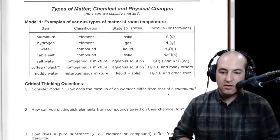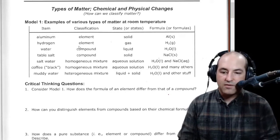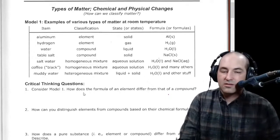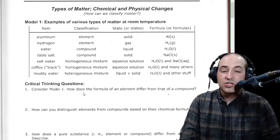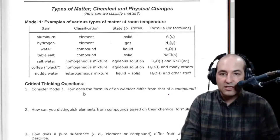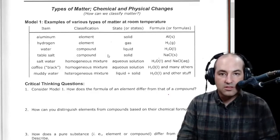Consider model one. How does the formula of an element differ from that of a compound? So you're not supposed to just look up element and compound and write down some definition from the internet. That's not helpful. That's not getting it into your brain. You should be able to figure this out just from this model, from this table.